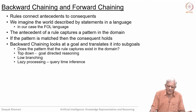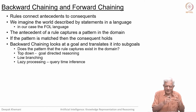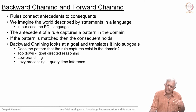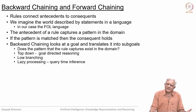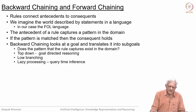Backward chaining looks at the goal and translates it into sub-goals. It repeats that process until the sub-goals match something in the knowledge base. The question is whether the pattern that the rule captures exists in the domain. It is a top-down process from goal to sub-goals towards individual facts—goal directed. It has a low branching factor because only the rules whose consequent matches the goal will apply. It is also lazy processing—inferences are made only at query time, which could take time.